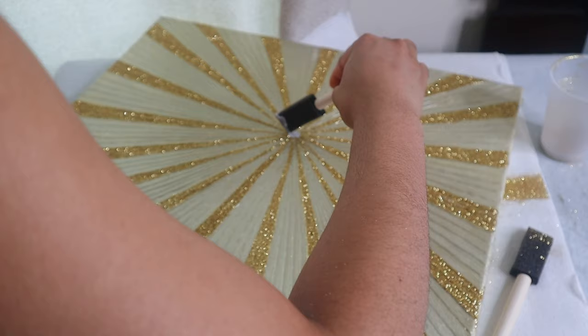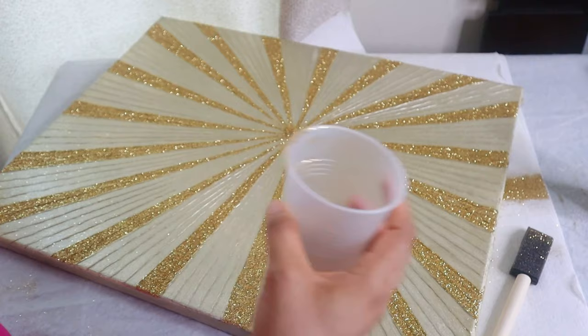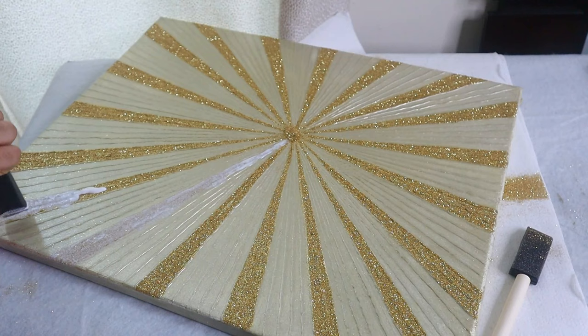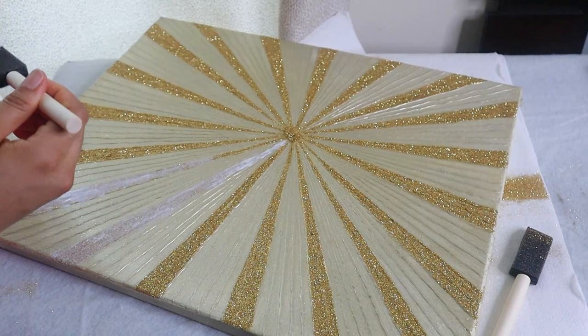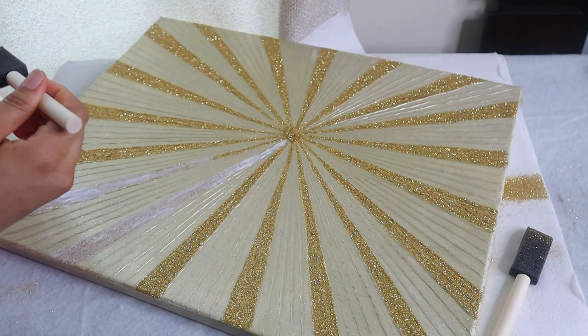When I was done adding the glitters, there was a little space in the middle of the artwork, so I decided to add mod podge to it and used glitter to cover it. When I was sure the mod podge is dry, I went ahead to add more mod podge on top of the glitters. This is going to help keep the glitters in place so that they don't fall off when you hang them. And don't worry about the white color from the mod podge. It's going to clear off when it dries.